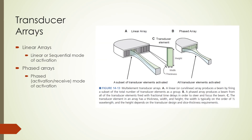Ultrasound transducers have crystal elements arranged in arrays, which may contain from 128 to 512 individual crystal elements. These arrays are activated in a linear mode or a phased mode. In linear activation mode, a small group of elements are activated to produce the ultrasound beam and echoes are detected with most of the transducer elements, producing a rectangular field of view. With phased activation, all transducer elements are activated simultaneously to produce the ultrasound beam, and all elements are used to detect the returning echoes.